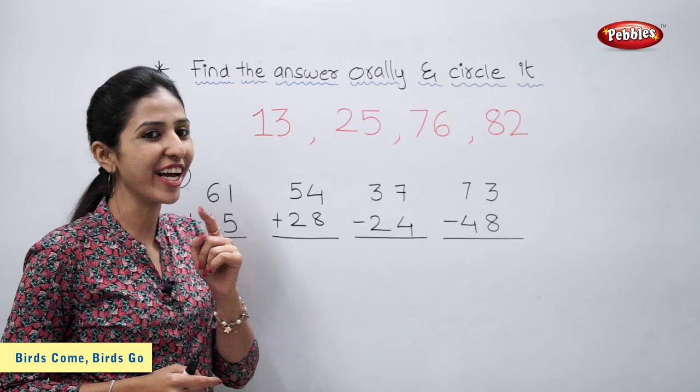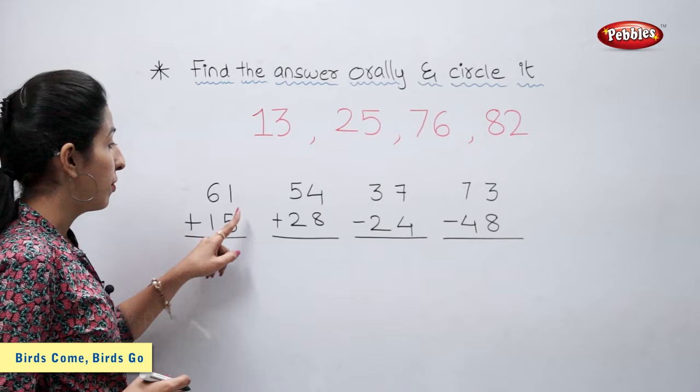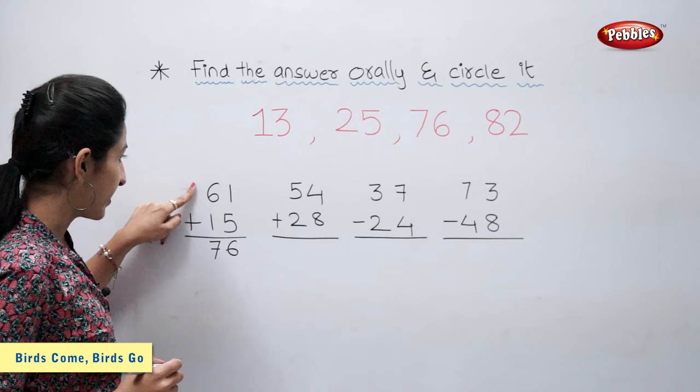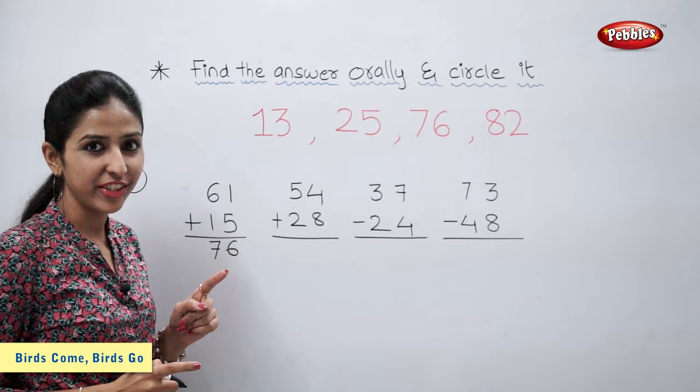61 plus 15. 1 plus 5 is 6. 6 plus 1 is 7. So 61 plus 15 is equal to 76. Let's circle number 76.